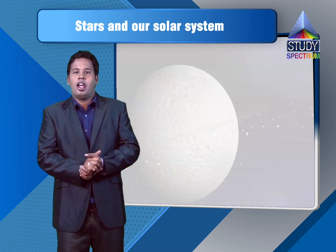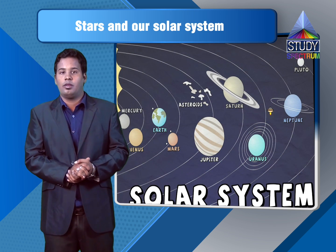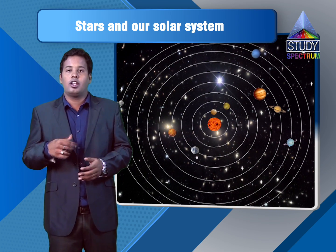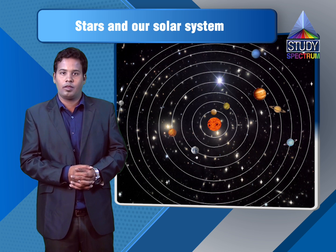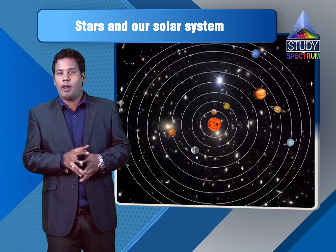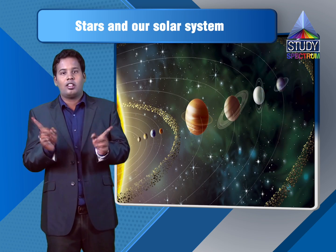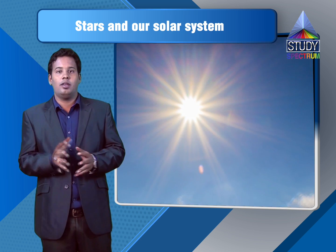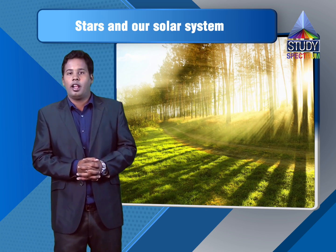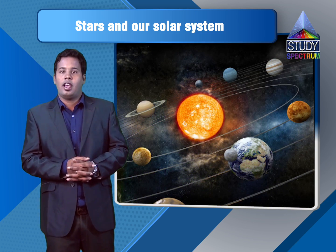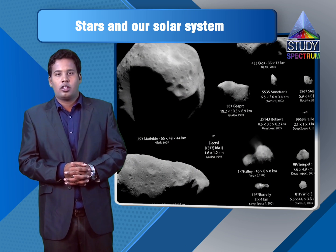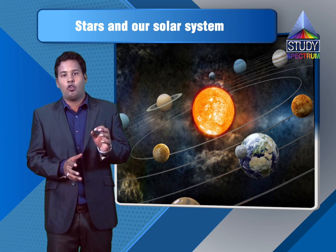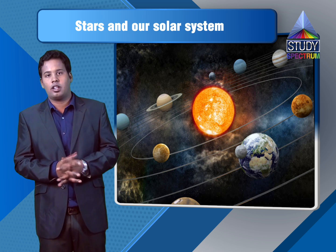Let us start and understand what is a solar system. A solar system refers to a star and all those objects which orbit around it, revolving in their own orbits. Our solar system consists of eight planets and the star known as the sun. There are also dwarf planets like asteroids and comets. So our solar system basically consists of the sun as the star, eight main planets, and dwarf planets — meaning small heavenly bodies like asteroids and comets.